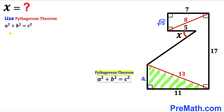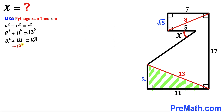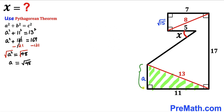I'm going to subtract 121 from both sides — here we can see they cancel out — so therefore a² turns out to be 48. Taking the square root on both sides, our a value turns out to be √48. So this side length turns out to be √48.